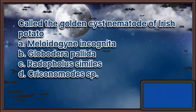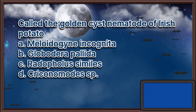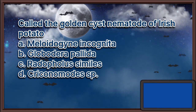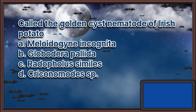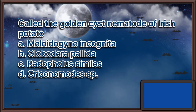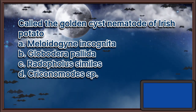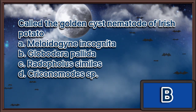Called the golden cyst nematode of Irish potato. A. Meloidogyne incognita. B. Globodera pallida. C. Rotopholus similes. D. Croconimodes. The answer is letter B.